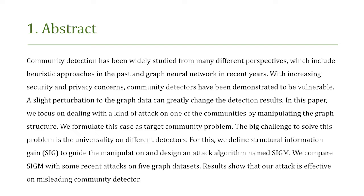The first part is the abstract. Community detection has been widely studied from many different perspectives, which include heuristic approaches in the past and graph neural networks in recent years. With increasing security and privacy concerns, community detectors have been demonstrated to be vulnerable. A slight perturbation to the graph data can greatly change the detection results. In this paper, we focus on a kind of attack on one of the communities by manipulating the graph structure, and we formulate this case as the target community problem.